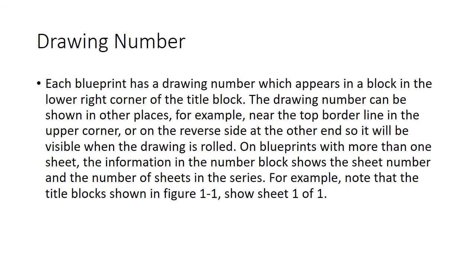The drawing number: each blueprint has a drawing number which appears in a block in the lower right-hand corner of the title block. It can also appear near the top borderline or on the reverse side. A drawing number is basically a Social Security number or identification number for a drawing — it's a unique numerical identifier so it won't get confused with other drawings and you can keep track of things.